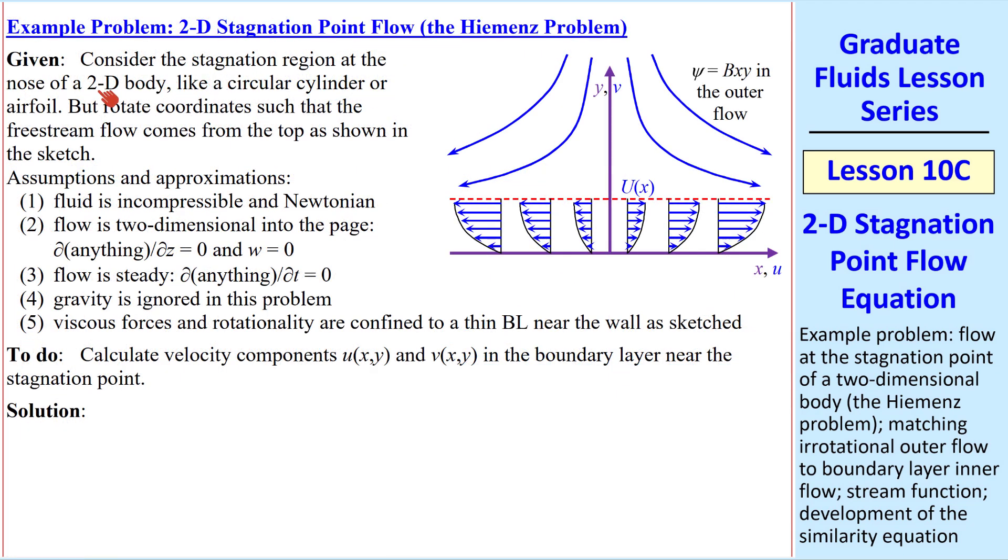We're considering the stagnation region at the nose of a 2D body, for example the stagnation region near the front of a 2D airfoil. If we rotate this by 90 degrees, we have stagnation point flow on a vertical body, which is what we're showing here. Keep in mind that we're examining the region very close to the stagnation point itself.